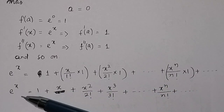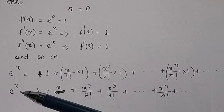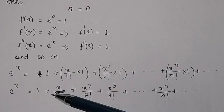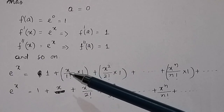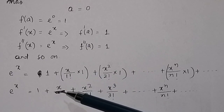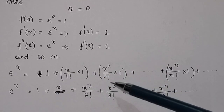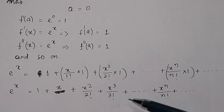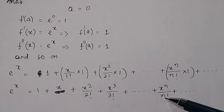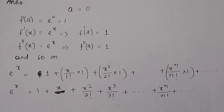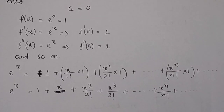So the final expansion of e^x using the Taylor series is: e^x = 1 + x + x squared divided by factorial 2 + x cubed divided by factorial 3 + ... + x^n divided by factorial n. In this way, you can find the Taylor series expansion of e^x about x = 0. Thank you.